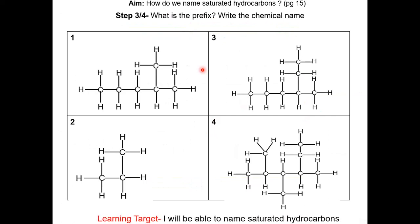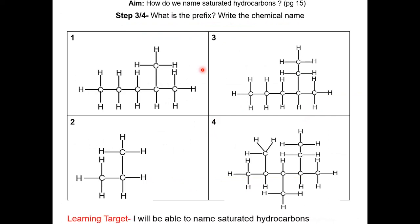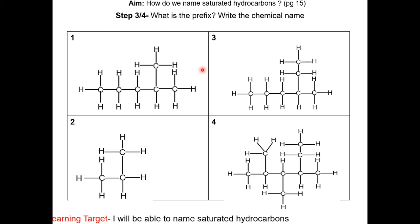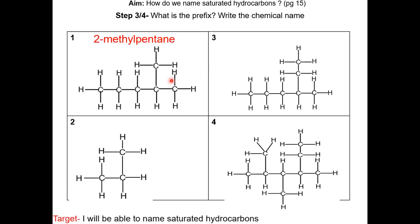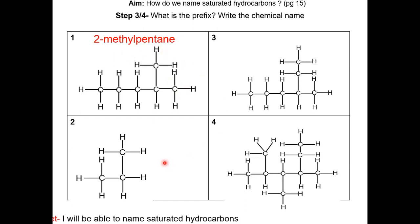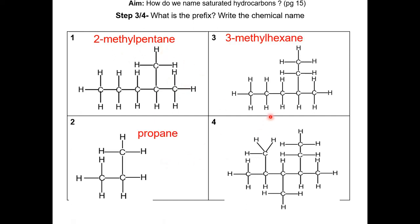On page 16, take a moment to name each of these molecules. Here are the answers: this one is 2-methylpentane, this one is propane, this one is 3-methylhexane, and this one is 2,3,4-trimethylhexane.